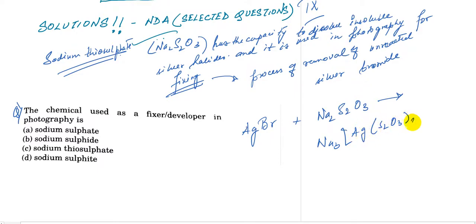[Ag(S2O3)2] twice plus NaBr. This complex is named sodium argentothiosulfate.